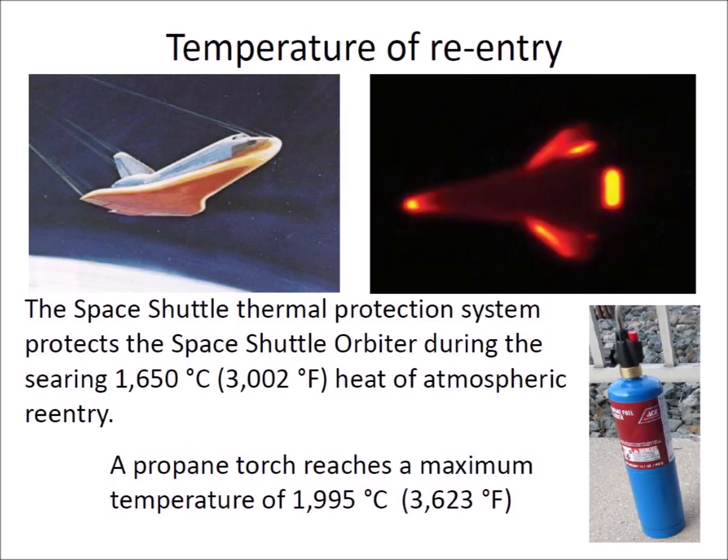The Space Shuttle Thermal Protection System protects the Space Shuttle Orbiter during the searing 1,650 degrees Celsius of atmospheric reentry. This temperature is slightly lower than the 1,995 degrees Celsius produced by a propane torch. This provides the opportunity for conducting an experiment to see if a chunk of ice can withstand the heat of a propane torch for one minute without completely melting.